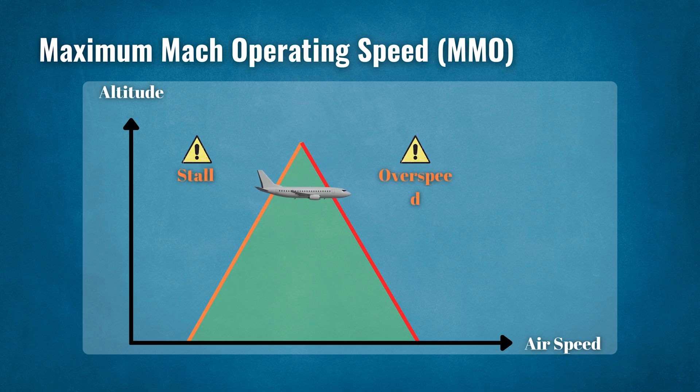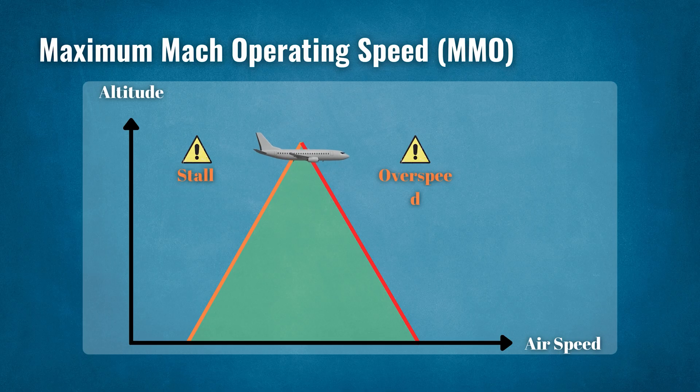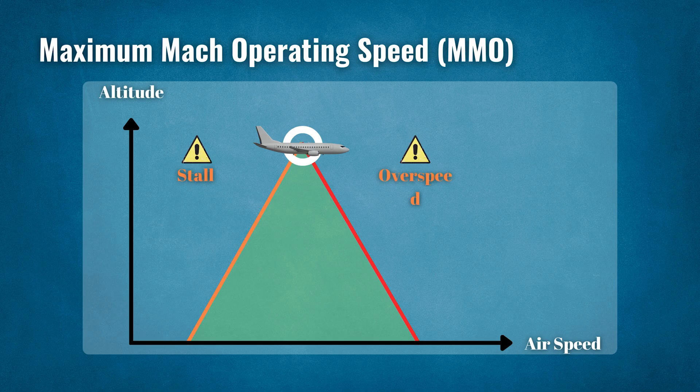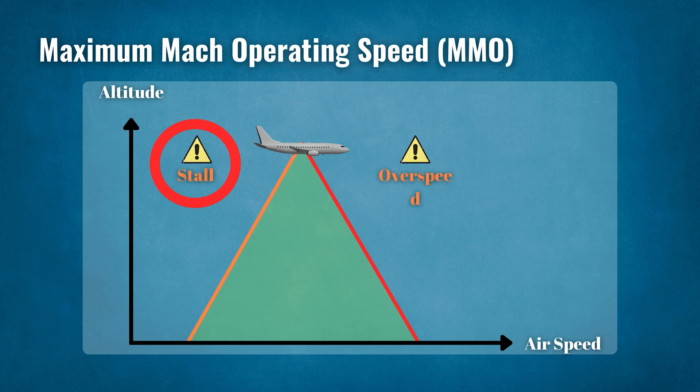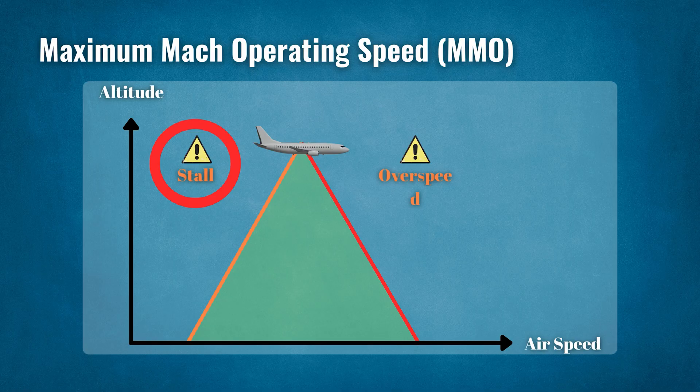As the aircraft climbs towards the coffin corner, the margin between stall speed and the critical Mach speed becomes smaller. Flying too slow, a pilot will encounter a low speed buffet and reach the stall speed limit. Flying too fast will result in reaching the Mach limit and encountering a high speed buffet, which again causes airflow separation on the wings and ends in a stall.